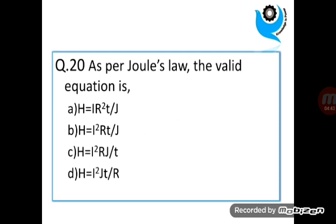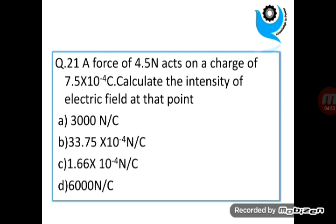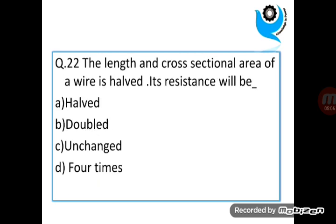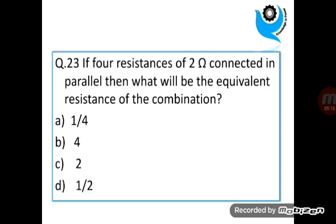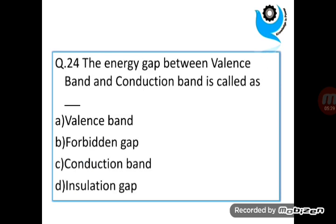Question 20. As per Joule's law, the valid equation is. Answer is B. Question 21. Force of 4.5 Newton acts on a charge of 7.5 to 10 raise to minus 4 coulomb. Calculate the intensity of electric field at that point. Answer is D. Question 22. The length and cross sectional area of a wire is halved. Its resistance will be unchanged. Question 23. If 4 resistances of 2 ohm connected in parallel then what will be the equivalent resistance of the combination? Answer is 2.